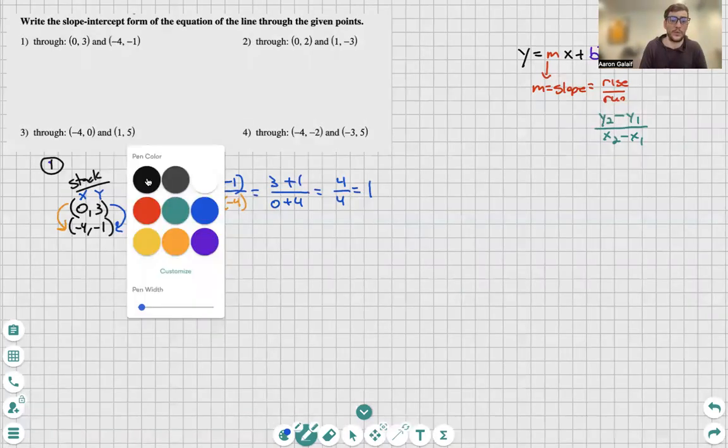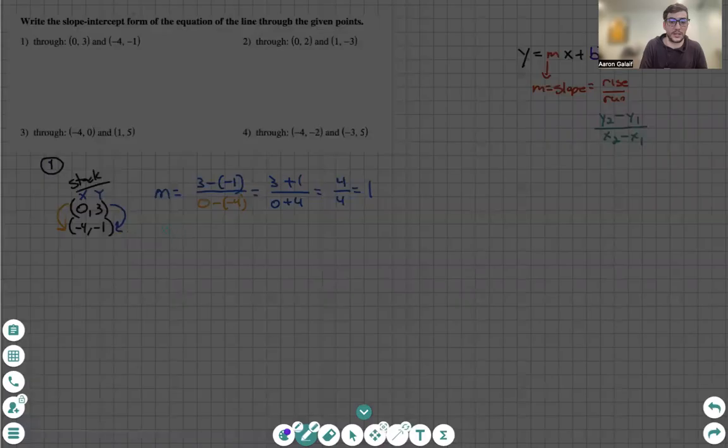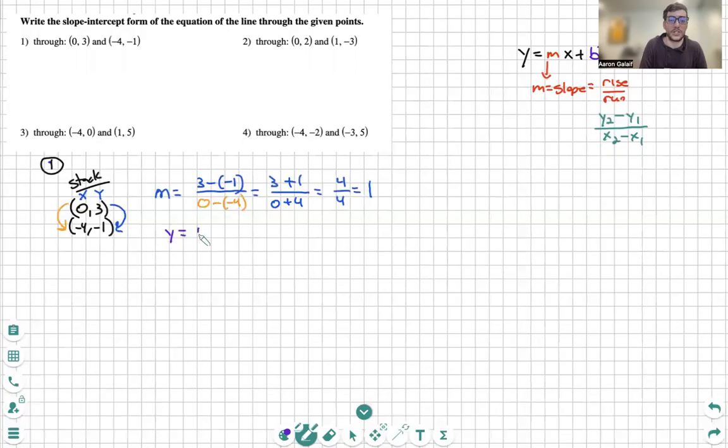Now, we will continue with trying to solve. Let's get this in a good color. Trying to solve now for b. We have my m. We still need b. Now, in order to solve for b, I plug my m back into y equals mx plus b. And I'm going to take a point.